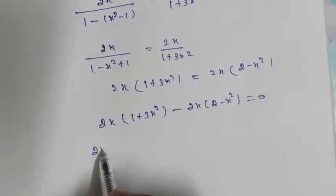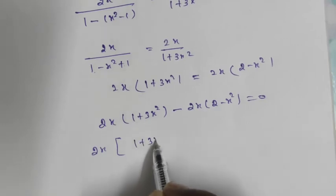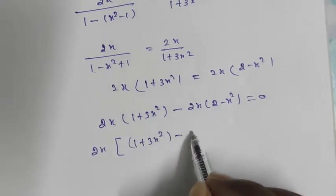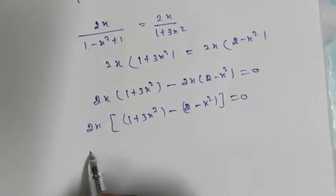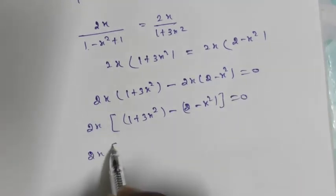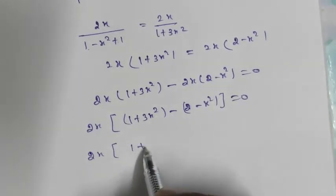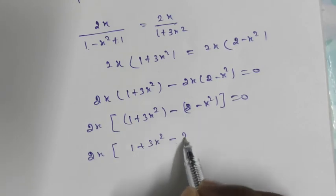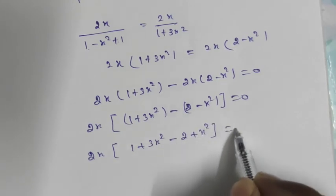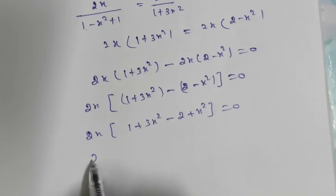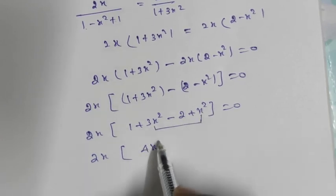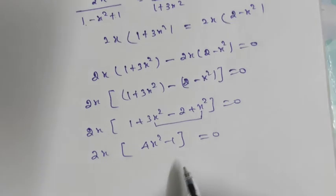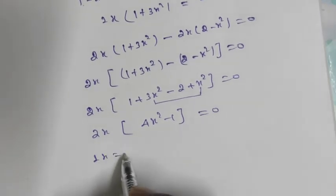Taking 2x as common: 2x times [(1 plus 3x squared) minus (2 minus x squared)] equals 0. Expanding inside the bracket: 1 plus 3x squared minus 2 plus x squared equals 4x squared minus 1. So we get 2x(4x squared minus 1) equals 0. Therefore, 2x equals 0, giving x equals 0.